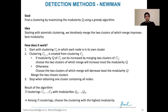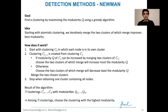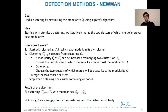We start with the first method, Neumann's method. Its goal is to find a clustering by maximizing the modularity of this clustering using a greedy algorithm. The idea is to start with an atomistic clustering, that is a clustering in which each node is the only member of its own cluster.